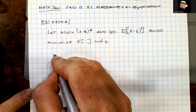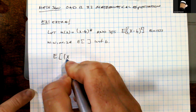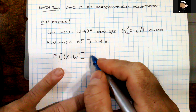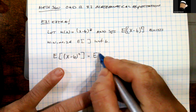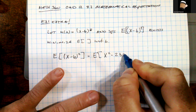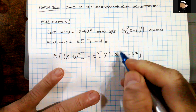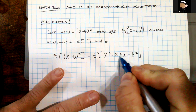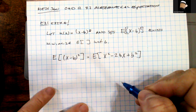To start off, we're given u(x) = (x-b)². This is a pretty straightforward algebraic approach. I'm going to foil out or multiply out the interior, distribute, and we get x² minus 2bx plus b². Since b and x are real numbers, they're commutative, so bx is the same as xb, which gives us the 2 in the middle.